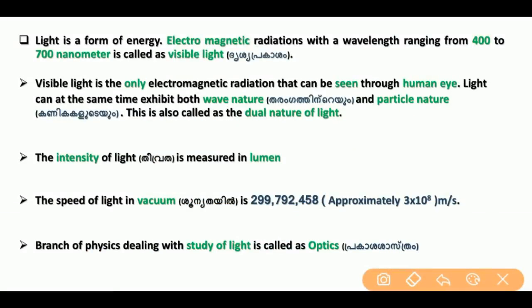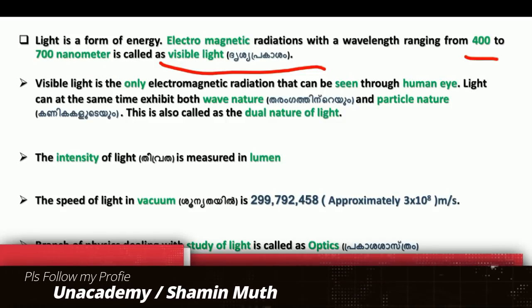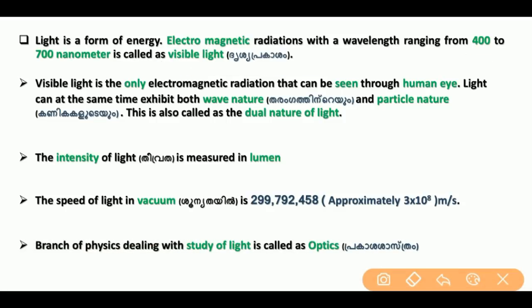Light is a form of energy. It is an electromagnetic radiation. The effect we are studying is visible light. The wavelength of visible light is between 400 to 700 nanometers. Visible light is the only electromagnetic radiation that can be seen through the human eye. Radio waves and infrared waves are also electromagnetic radiation but are not visible.